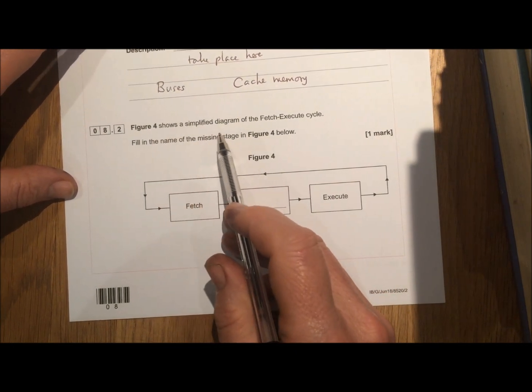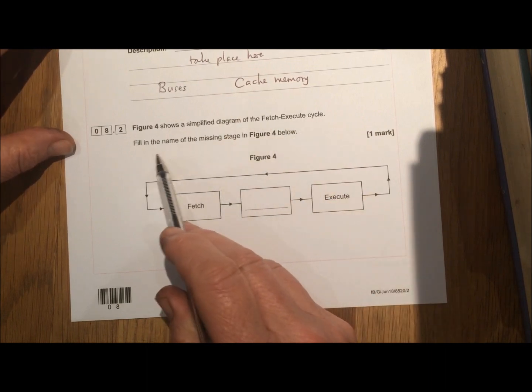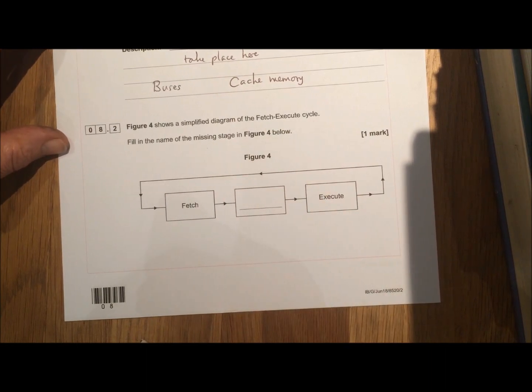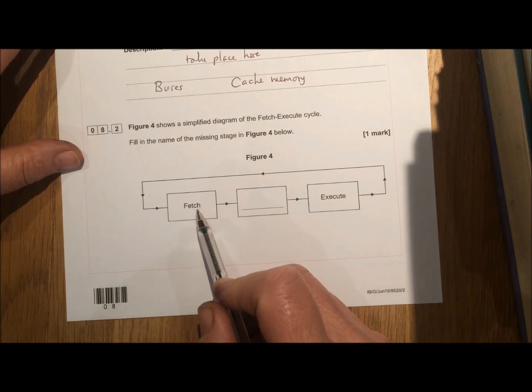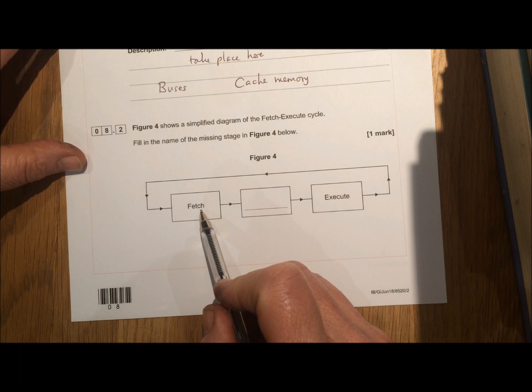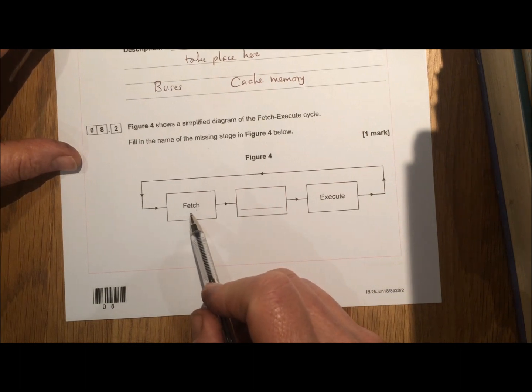Figure four shows a simplified diagram of the fetch execute cycle. Fill in the name of the missing stage in figure four below. So the fetch part of the fetch execute cycle is when an instruction is brought into the CPU from the memory of the computer.